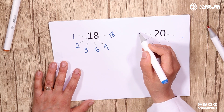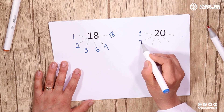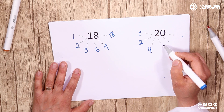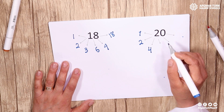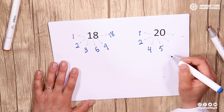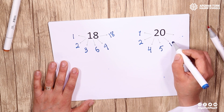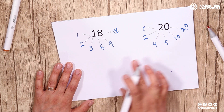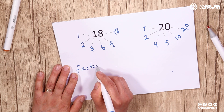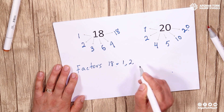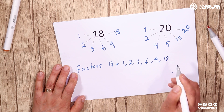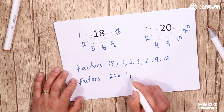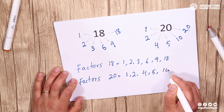Now for 20: the first factor is 1. The unit digit is 0, so it's divisible by 2. It's not divisible by 3, but it's divisible by 4 and by 5, because the unit digit is 0. The factors also include 10 and 20. So the factors of 18 are 1, 2, 3, 6, 9, and 18. And the factors of 20 are 1, 2, 4, 5, 10, and 20.